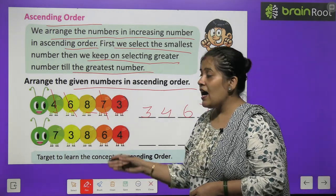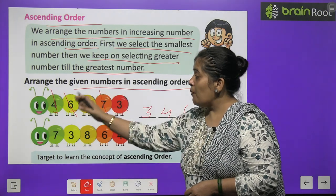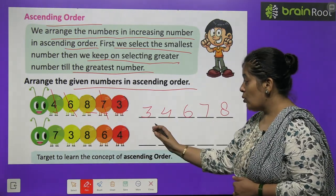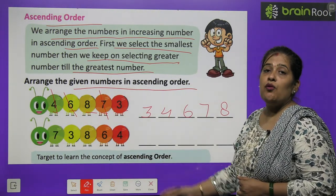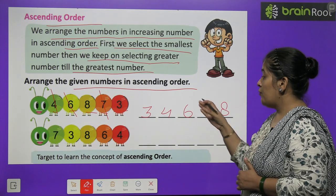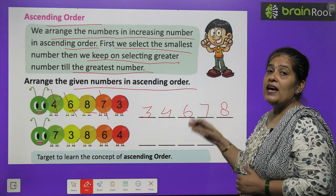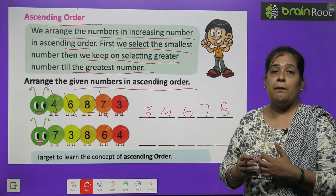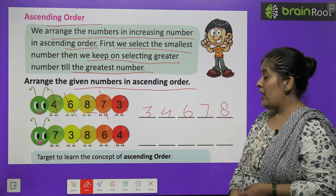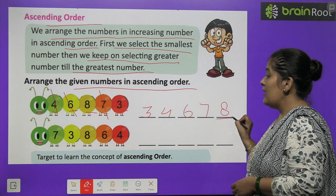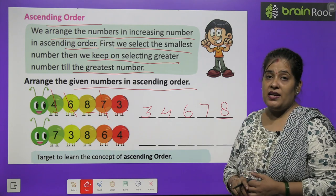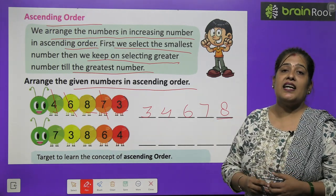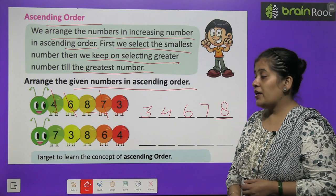Hamne kya kiya? In sab numbers mein se pehle sabse chhota number, phir usse bada number, aur phir usse bada — is tareeqe se sabse bada number jo hai, use humne last mein likha. Toh is method ko hum kehte hain ascending order.